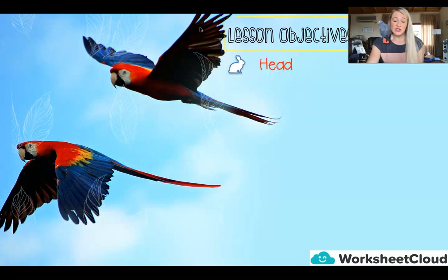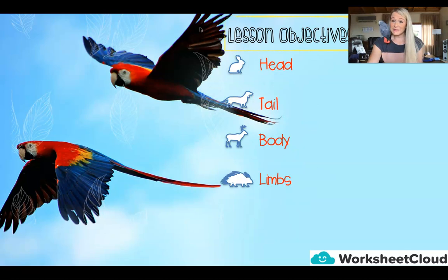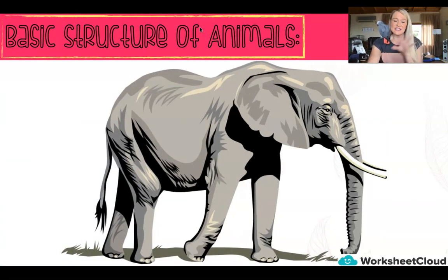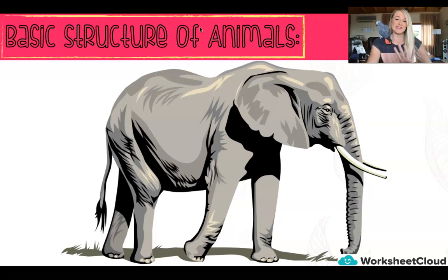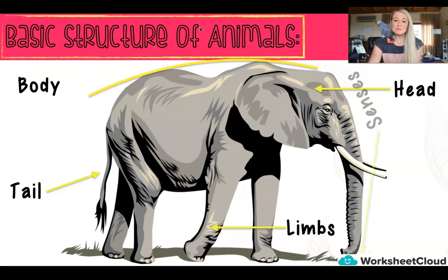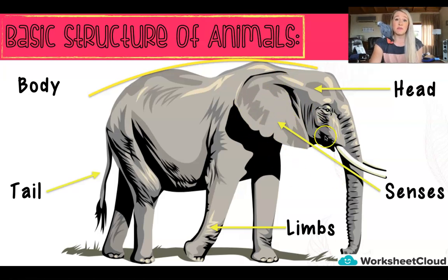So today we are going to be looking at the structure of animals and the different parts of an animal's body. Our objectives: we're going to start with the head, then the tail, then the body, the limbs, and finally we'll end off with the senses and then do a little activity. Remember our senses are our eyes, our nose, what we taste with our mouth, what we hear, and then obviously touch.